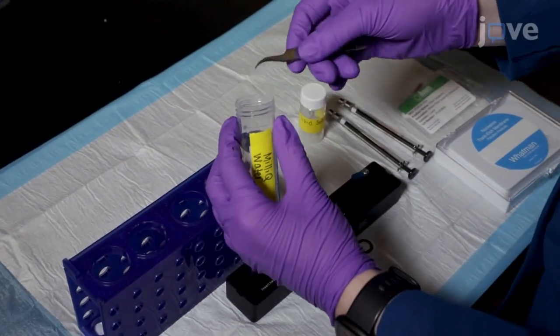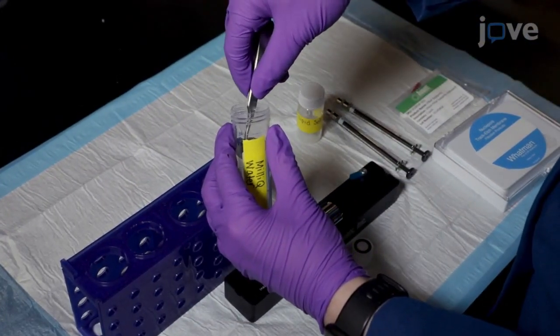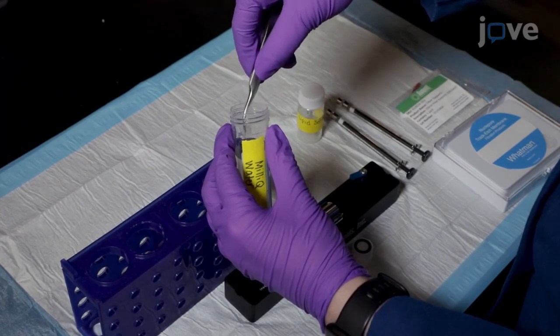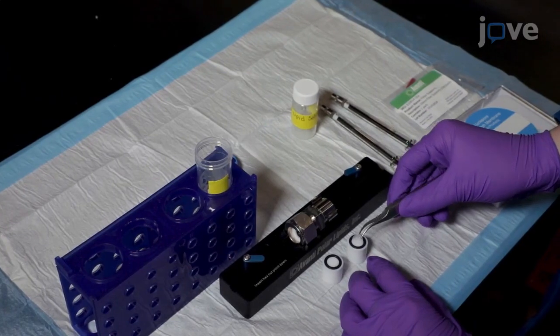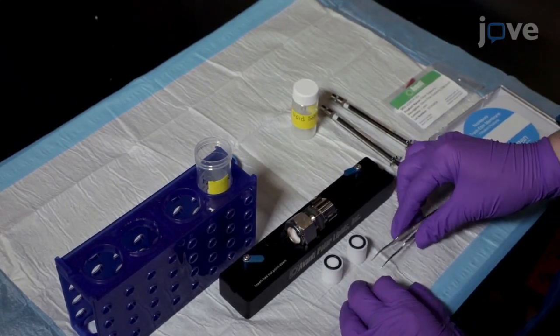To make one milliliter or less of vesicles, obtain a mini extruder. Pre-wet a filter support with ultra-pure water, then place it on the membrane support surface inside the O-ring. Repeat for the second internal membrane support.